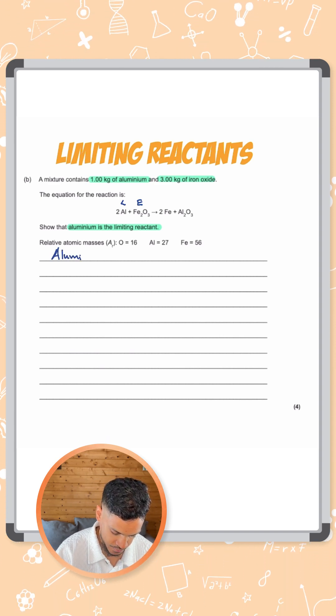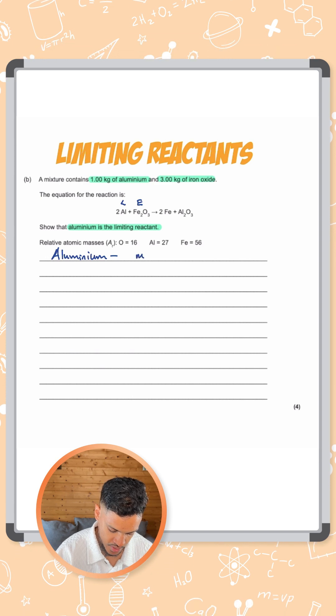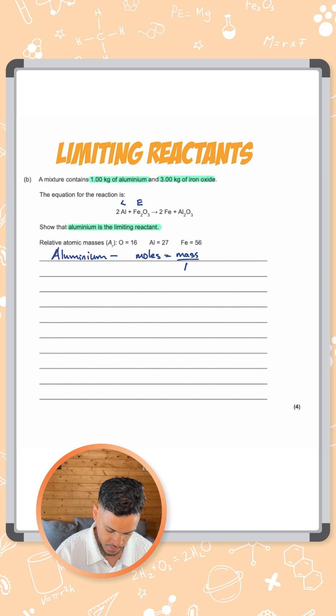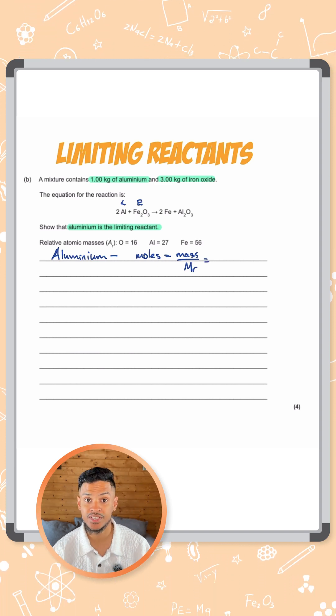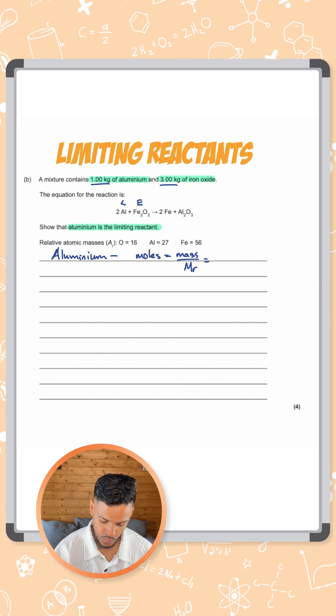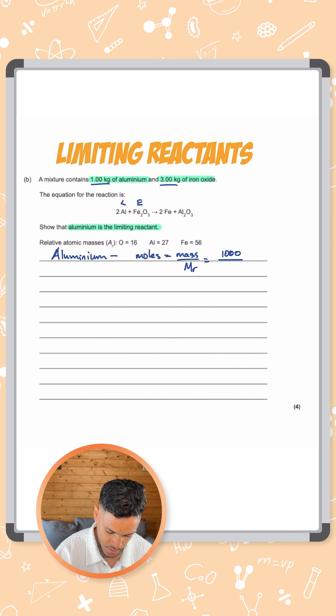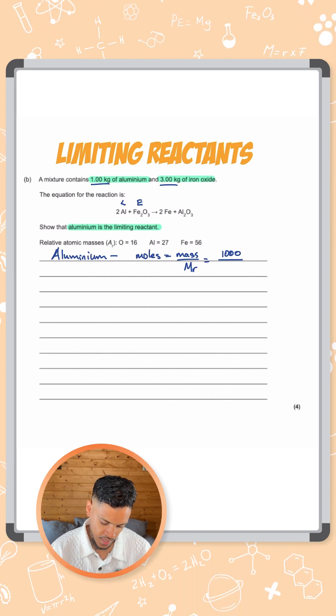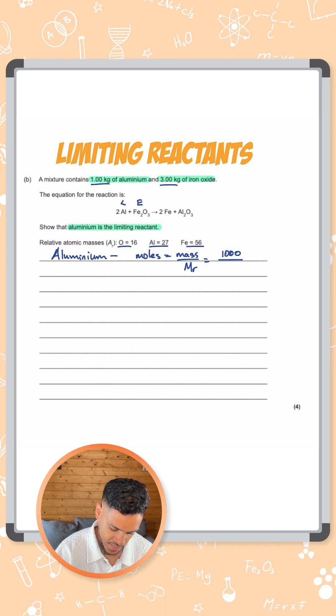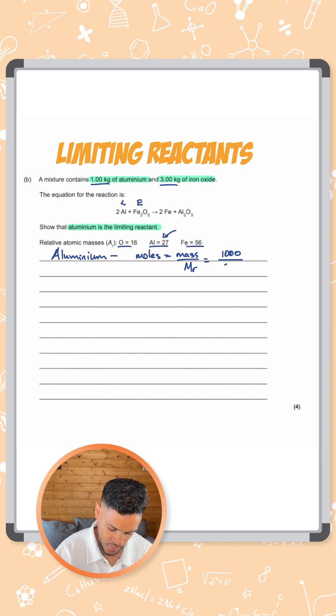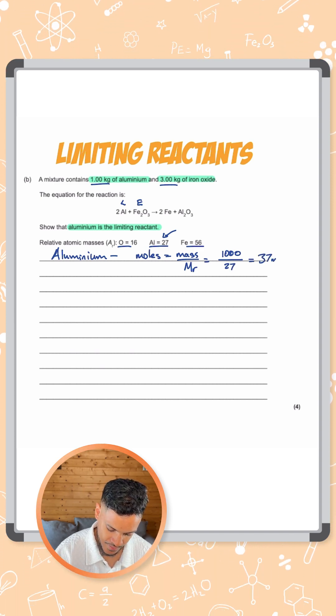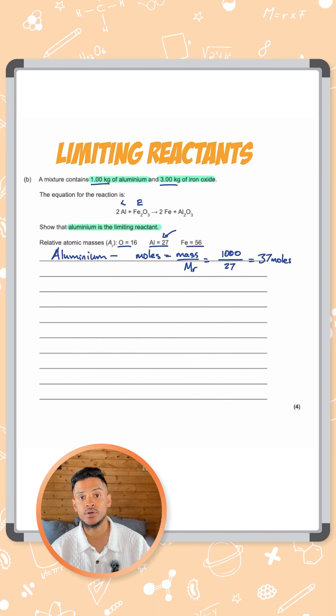Let's start with aluminum first. To find the moles of aluminum we use the equation moles equals mass over Mr. Remember, in this equation mass needs to be measured in grams. What they've given us is kilograms. So one kilogram is one thousand grams. So let's do one thousand grams divided by the Mr. We're dealing with elements, they've given us the Ars here. Aluminum is 27. So one thousand divided by 27 gives you 37 moles. So we have 37 moles of aluminum.